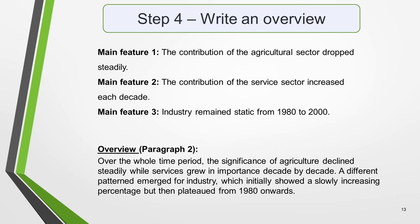In the second paragraph, you should report the main features you can see in the graph, giving only general information. The detail comes later in the essay. You should also make any clear comparisons you spot. This is where we write about the general trends. Here are the ones we picked out earlier: the contribution of the agricultural sector dropped steadily; the contribution of the service sector increased each decade; and industry remained static from 1980 to 2000. Now form these ideas into two or three sentences, with a total of around 40 words. State the information simply, using synonyms where possible. No elaborate vocabulary or grammar structures are required — just the appropriate words and correct verb tenses.